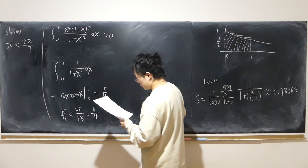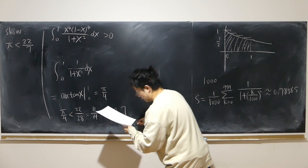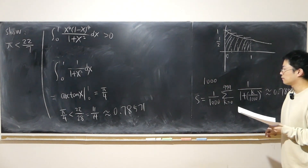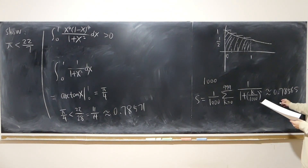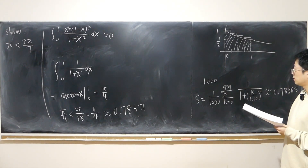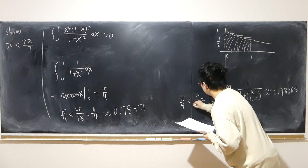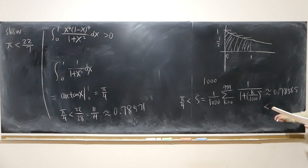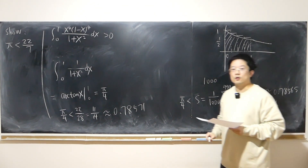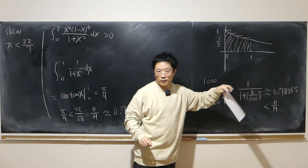I also used a calculator to find the approximate value of 11/14, which is about 0.78571. So 0.78565 is slightly smaller than 0.78571, and the area under the curve is smaller than the rectangle sum, which is smaller than 11/14. So by partitioning densely enough, I can also establish the estimate.